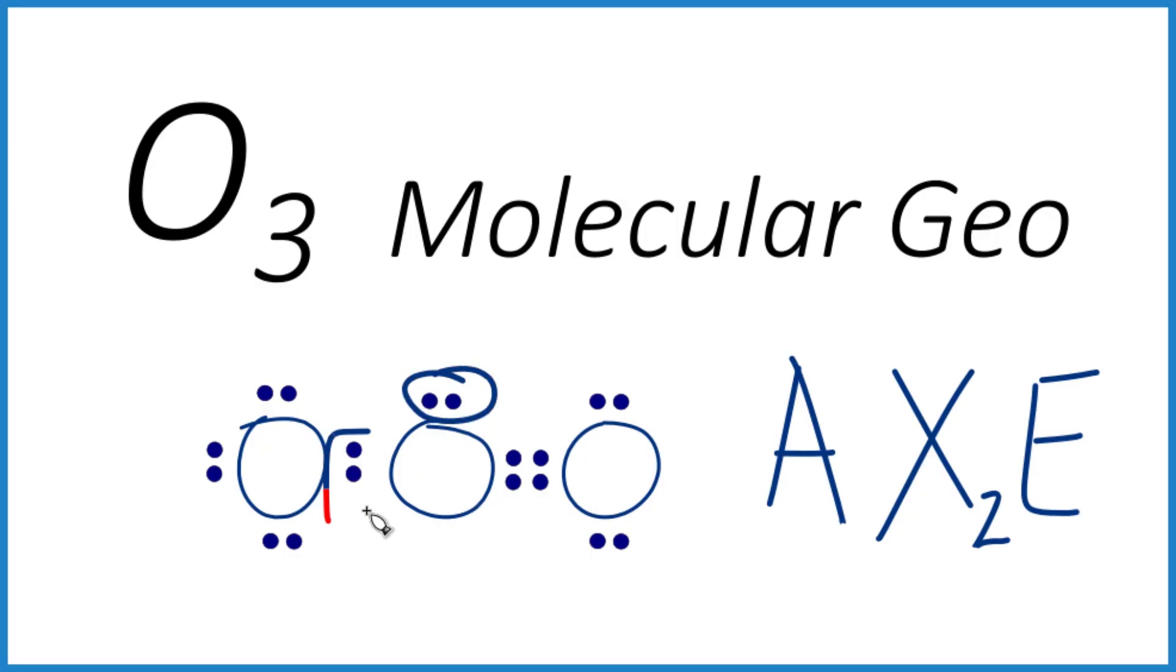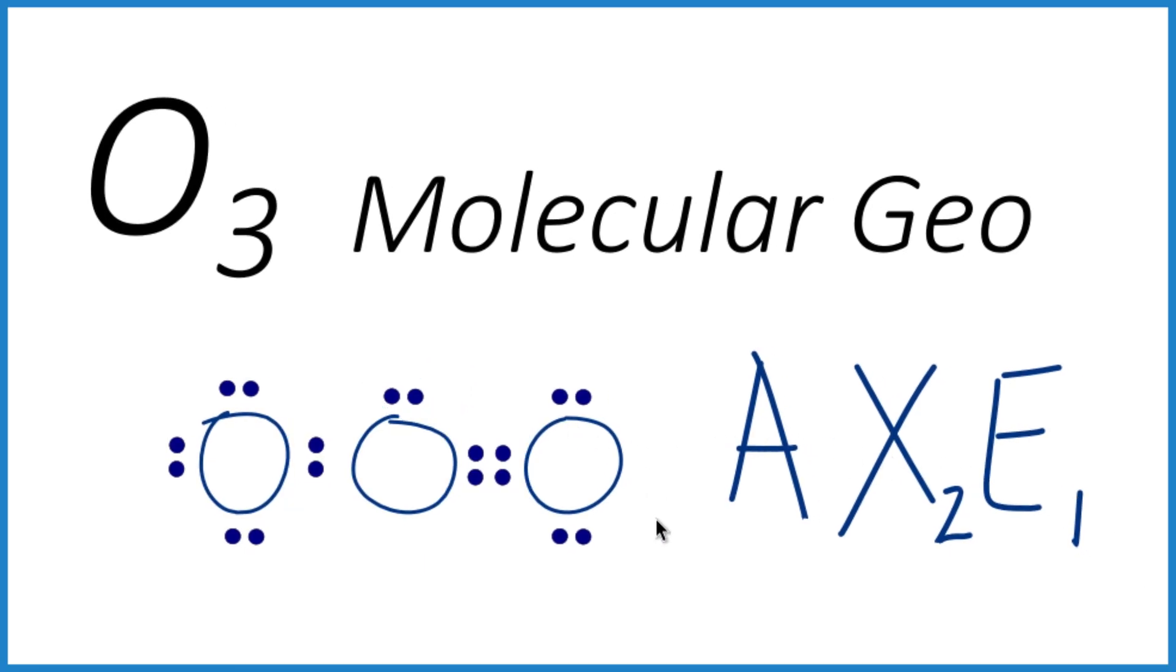This is the only lone pair. These right here, they're involved in a chemical bond. They're between the atoms. So just one lone pair. So we end up with AX2E1, or you could just call this AX2E. And you'll find that that is a bent molecular geometry.